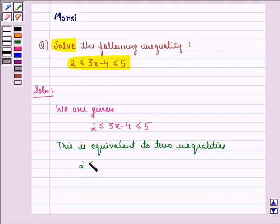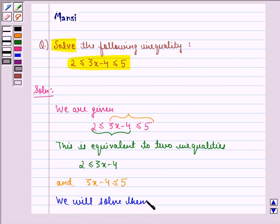2 is less than or equal to 3x minus 4, that's this part, and 3x minus 4 is less than or equal to 5, that's this part. We will solve them simultaneously.